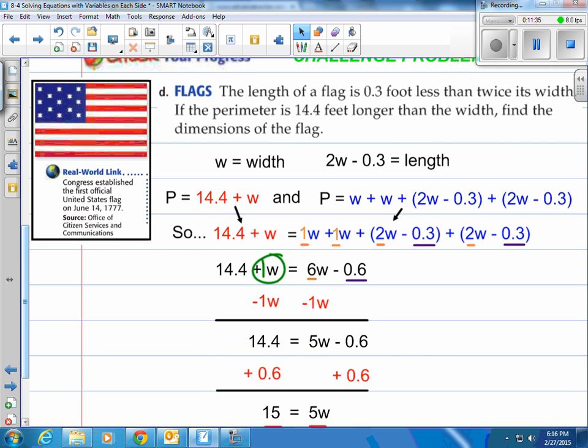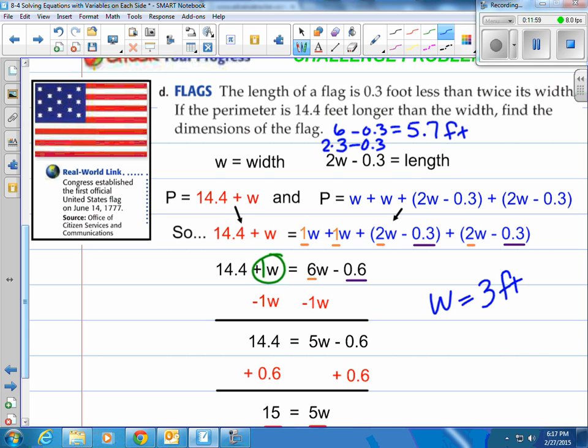Now what would be the length? If the width is 3, what would be the length? So width is 3. Well, take that 3 and let's plug it into the length formula, which is 2 times 3 minus 0.3. So that's 6 minus 0.3 and that is going to be 5.7 and I think we're measuring here in feet. So there we are. So the width is 3 feet and the length will be 5.7 feet.